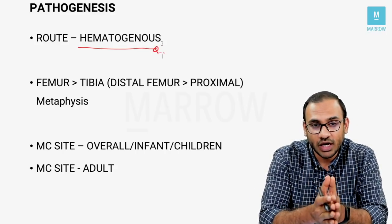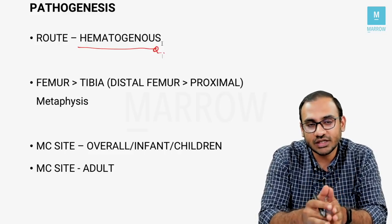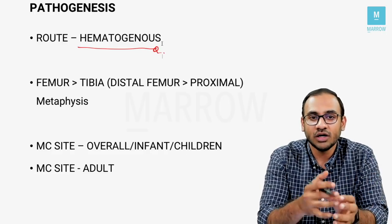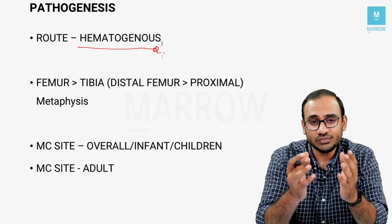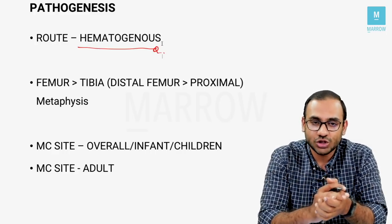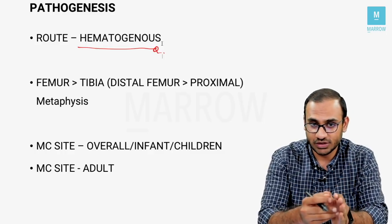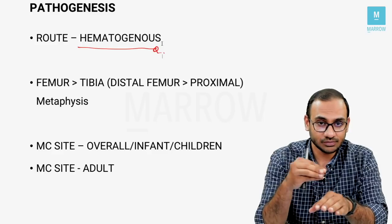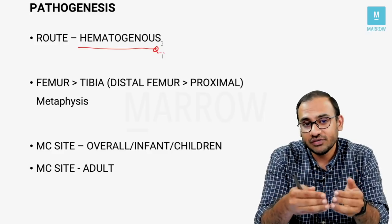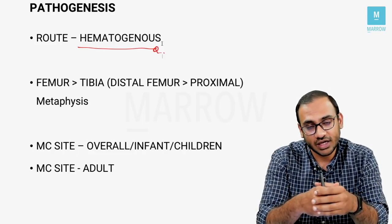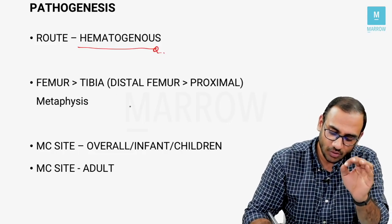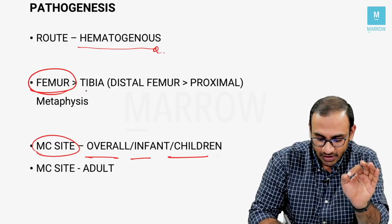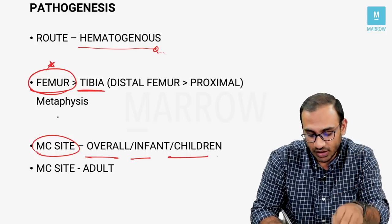The usual age group affected by osteomyelitis is patients with decreased immunity — either extremely young children or the elderly. Young children with low immunity will get osteomyelitis via the hematogenous route. The route can also be direct, such as an open fracture, or iatrogenic post-operative infection. The most common site overall — in infants and children — is the distal femur metaphysis.